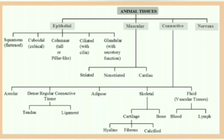Animal tissue is mainly of four types: epithelial, muscular, connective, and nervous. Epithelial can be of five types: squamous, cuboidal, columnar, ciliated, and glandular. Muscular can be of three types: striated, non-striated, and cardiac. Connective tissue includes areolar, dense regular, adipose, skeletal, and fluid tissue. Dense regular connective tissue has two types — tendon and ligament. Skeletal has two types — cartilage and bone. Fluid tissue has two types — blood and lymph.